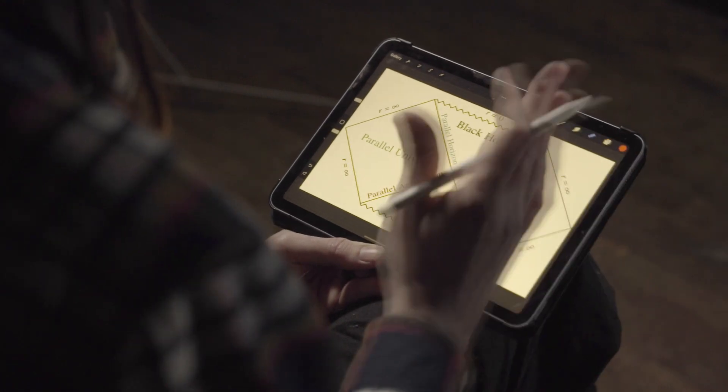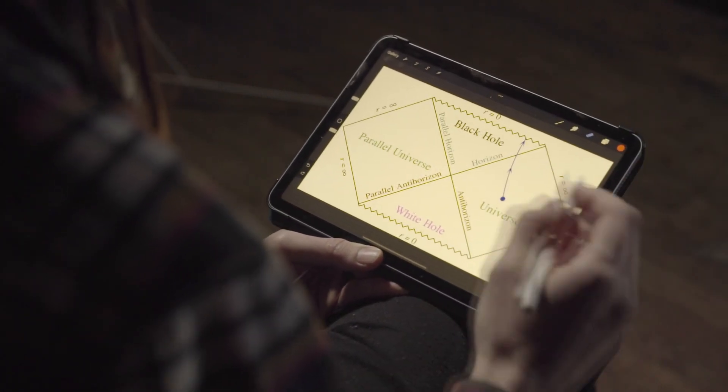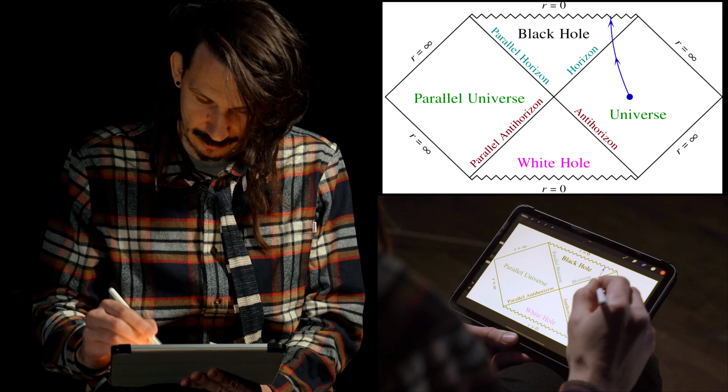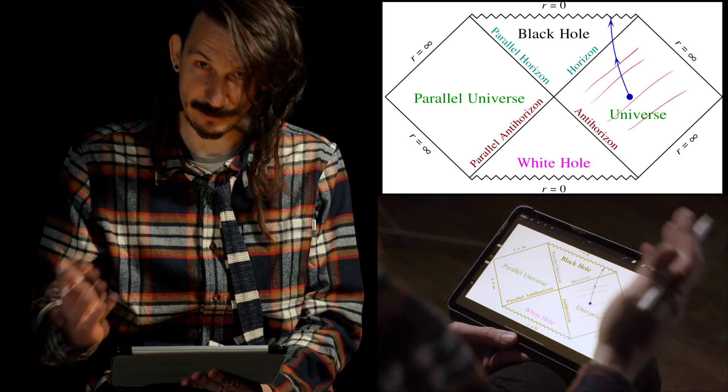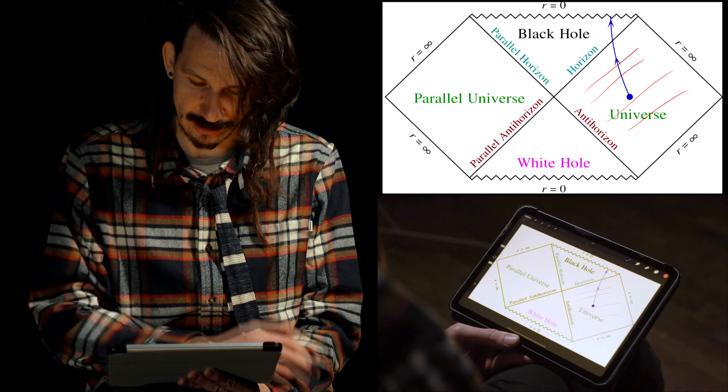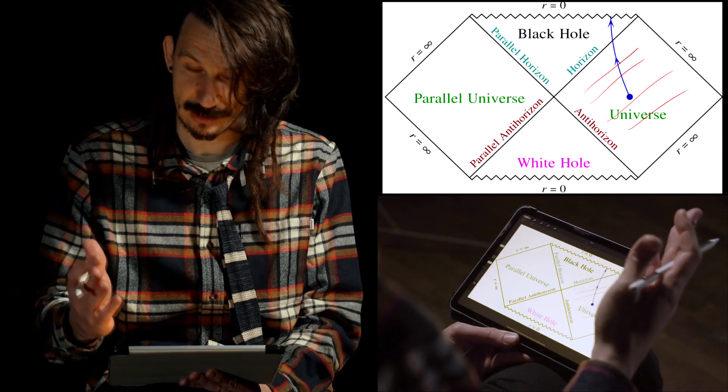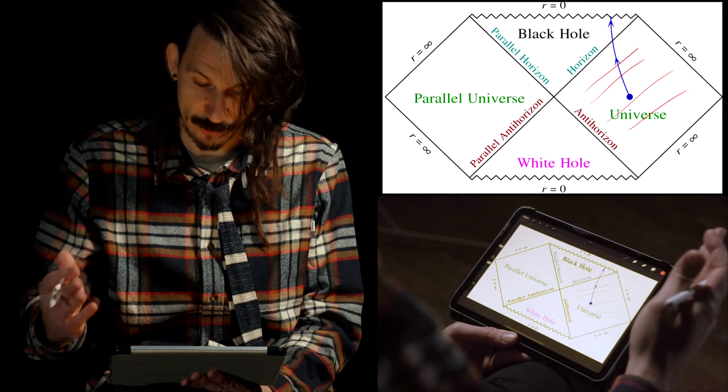A Penrose diagram is composed of many different parts. Here in this area, this is what we call the universe and is everything that is outside the black hole and is supposedly the region where we are right now.